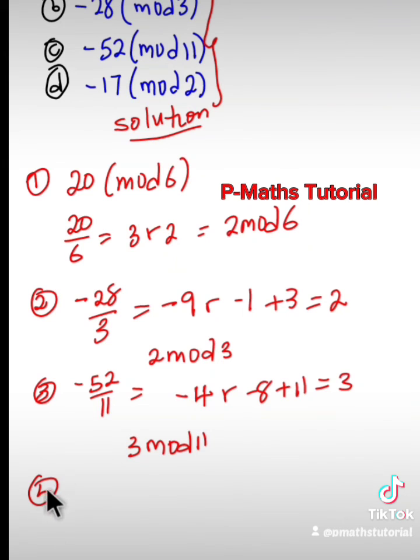And lastly, we have negative 17 mode 2. I want you to solve this one. Drop your answer in the comment section. Let me be sure you have understood it.